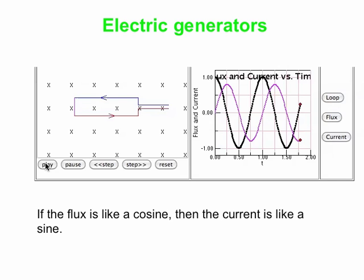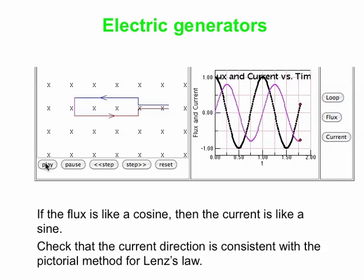So if the flux goes up and down following a cosine graph, then the current actually goes up and down following a sine graph. And you should check that the current direction, the way the current goes around the loop, is consistent with our pictorial method for Lenz's Law, because it definitely should be. So that's kind of qualitatively how things work.